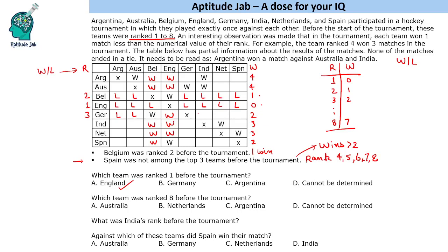The remaining matches of Germany end up as losses, so all other teams will win against Germany. Updating the win counts: Argentina has 5, Australia has 4, and others are updated accordingly. We have filled 0, 1, 2, and 3 wins. Spain must win 3 matches — we already filled those 3 wins, so the rest of Spain's matches are losses. The remaining teams win against Spain, bringing their totals to 5, 5, and 6.